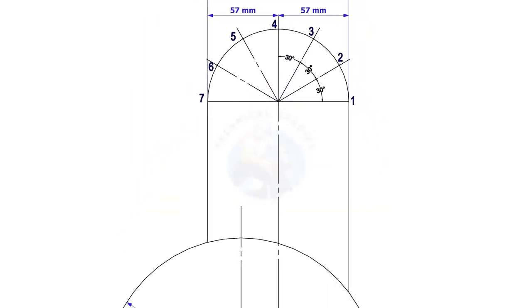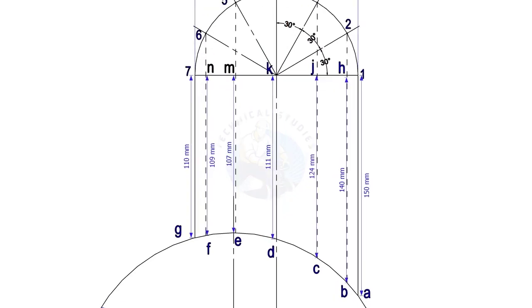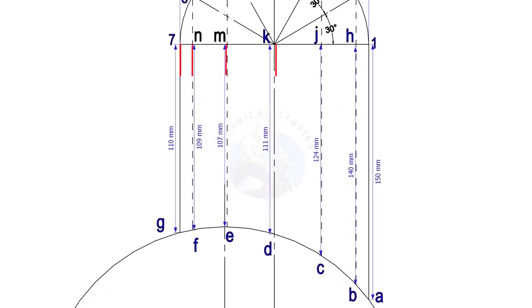Draw perpendicular lines from the intersection points to the header, as shown. These lines must be parallel to the branch center line. Note down the distances, G7, Fn, etc.